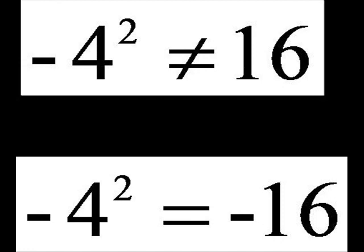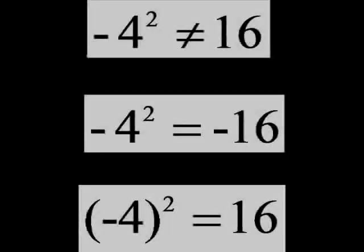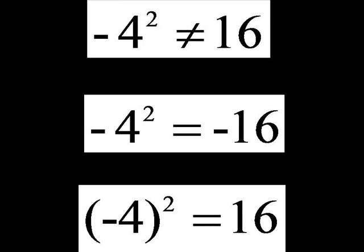Therefore, minus 4 squared does not equal 16. If we were to square the minus sign as well, the result would look like this: the quantity minus 4 squared, and that equals 16. Now our equation is correct.